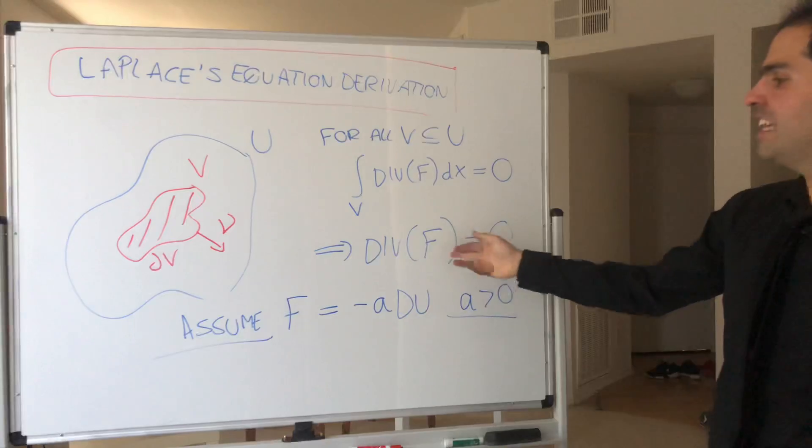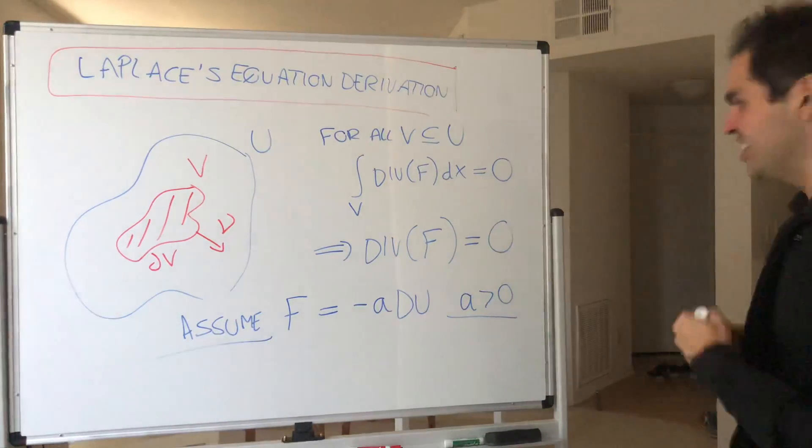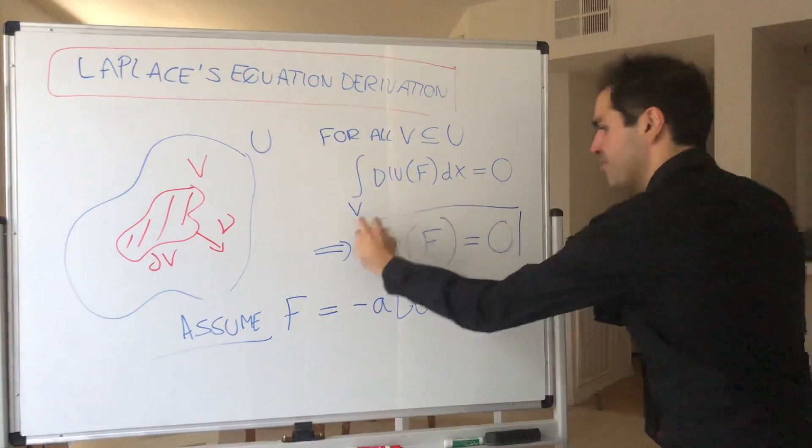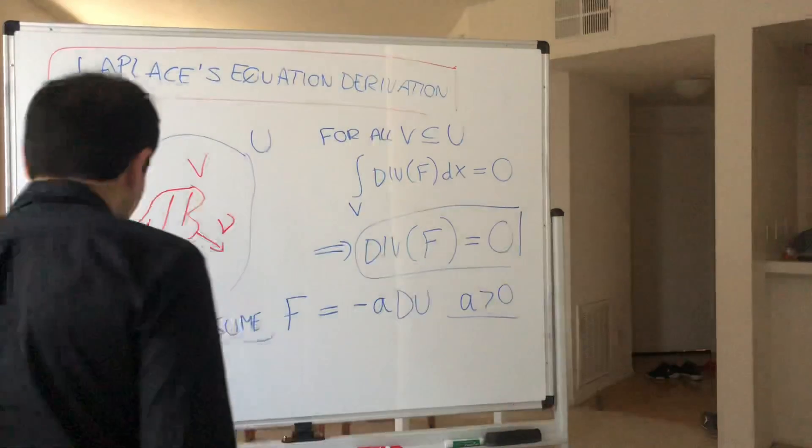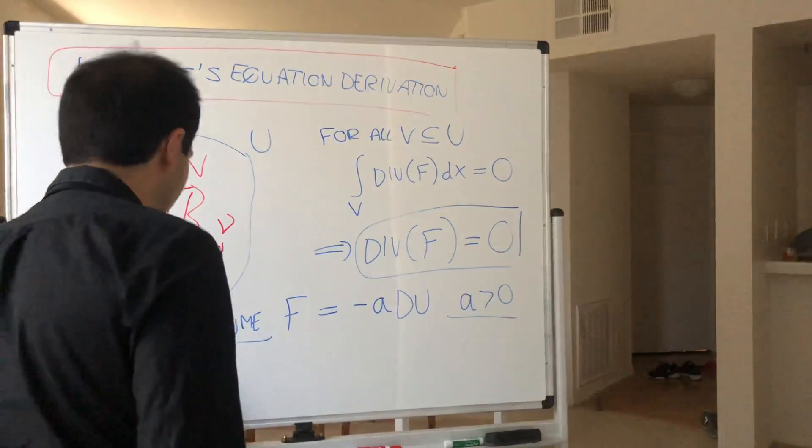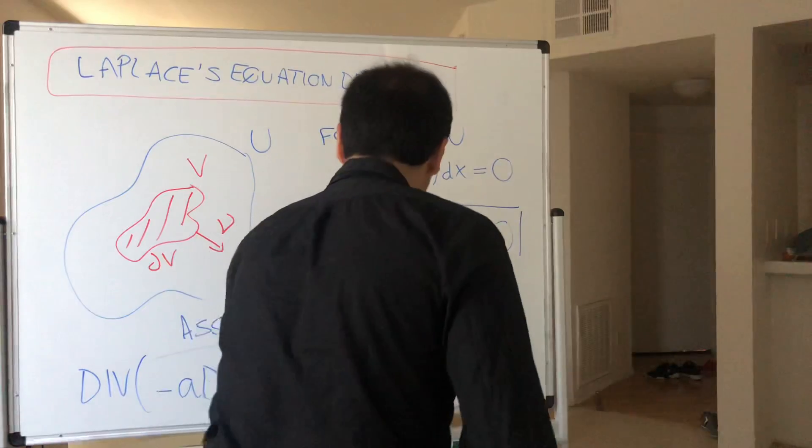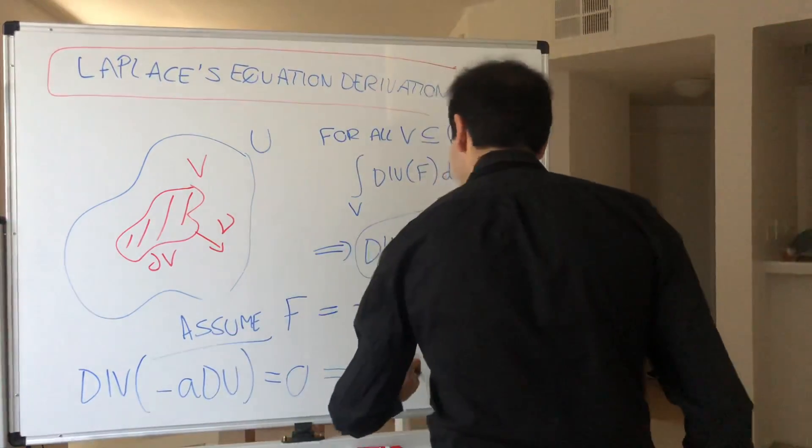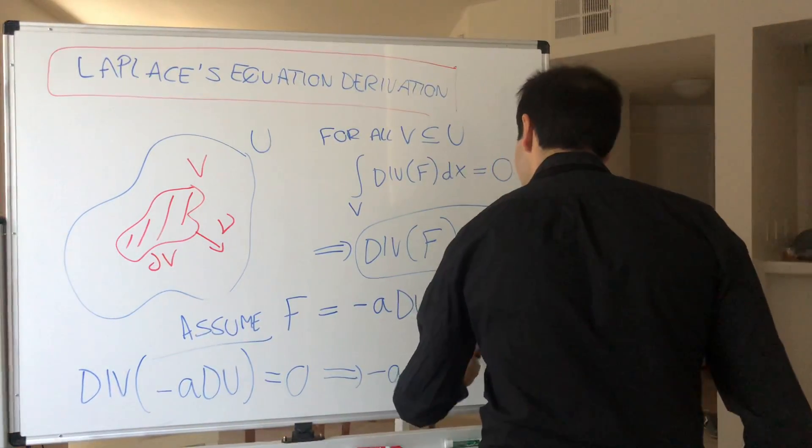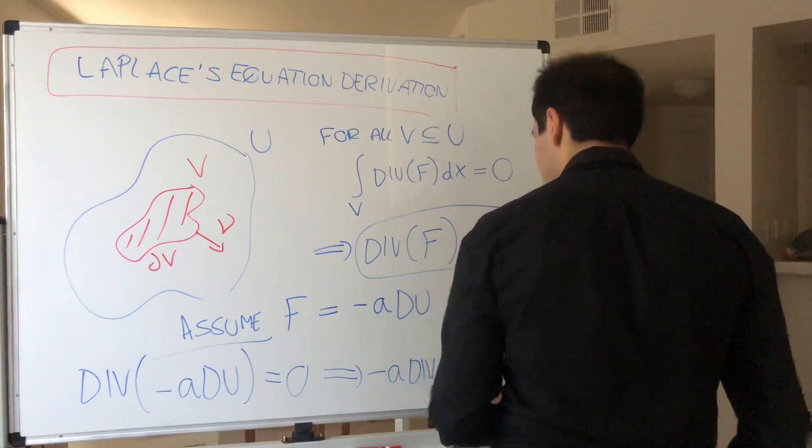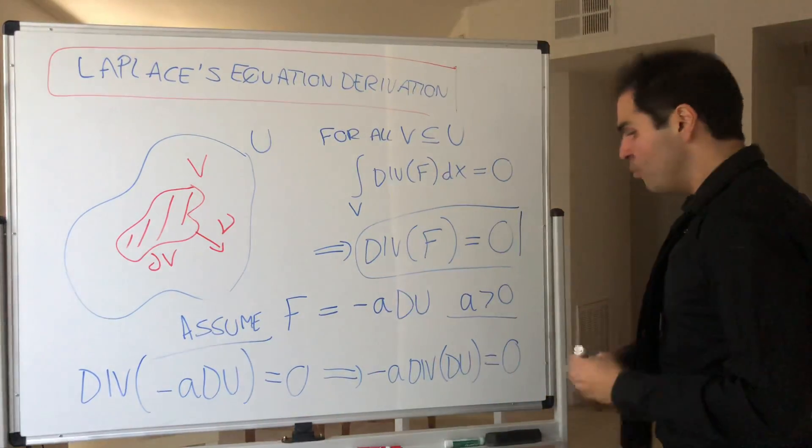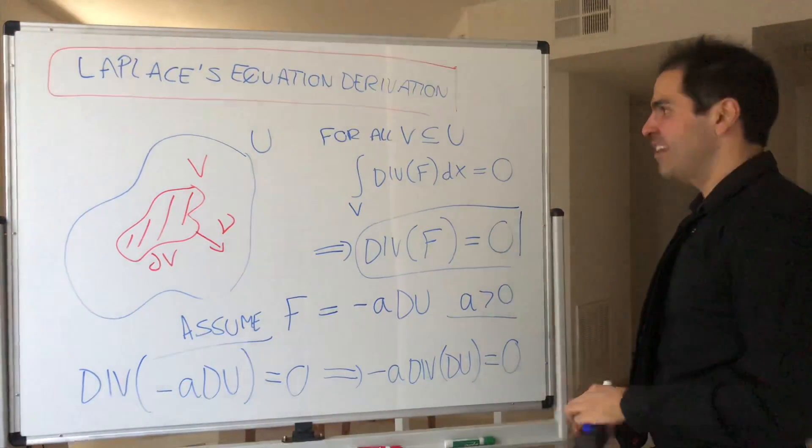Then, what you can do, you can plug in that ansatz into this equation. And what you get is, then you get divergence of minus A ∇u equals zero. So, minus A divergence of ∇u equals zero. But, again, what is the divergence of the gradient?